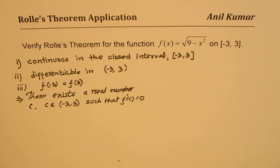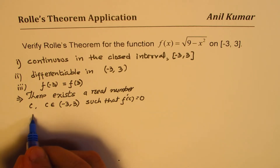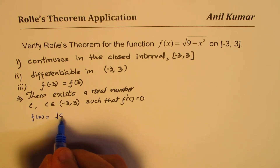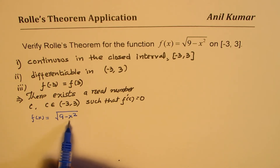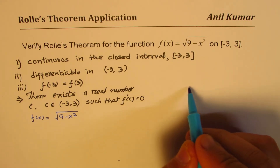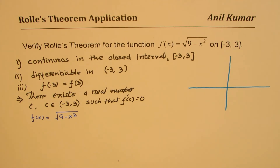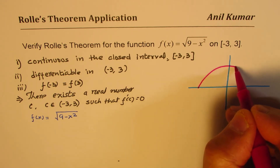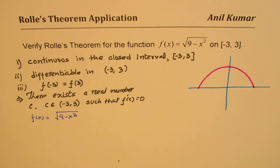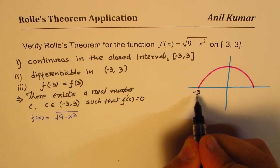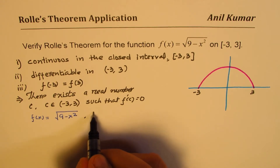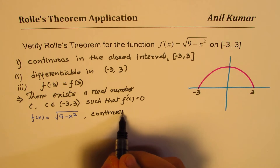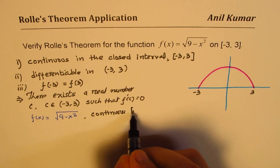Now let's try to verify one by one. We are given f(x) = √(9 - x²). This function is actually a semicircle. If you sketch this function, this is how it is going to look. From the sketch, you actually get the answer easily. These are the two endpoints, -3 and 3. So we can see it is continuous.